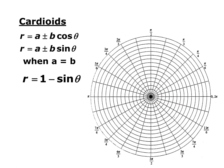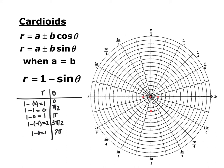The next type is cardioids, which have the same setup as a limaçon except a and b are equal. For r equals 1 minus 1 sine theta, use an r-theta table and plot your points. The key difference is that equal values of a and b cancel out, producing a zero — a point at the pole — which the limaçon doesn't have. The result looks much more heart-like, hence the name cardioid, because it goes deeper than the limaçon does.